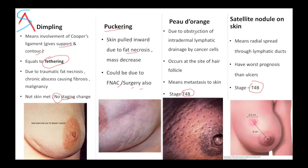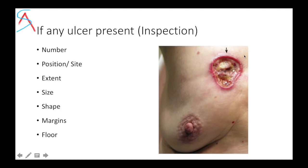Only peau d'orange and satellite nodules will change the stage of breast carcinoma. Peau d'orange occurs because of obstruction of intradermal lymphatic drainage by cancer cells, occurring at the site of hair follicles — it means there is metastasis to the skin. Satellite nodules mean radial spread through lymphatic ducts and the prognosis is worst. If any ulcer is present on inspection, describe its number, position, extent, size, shape, margin, and floor.